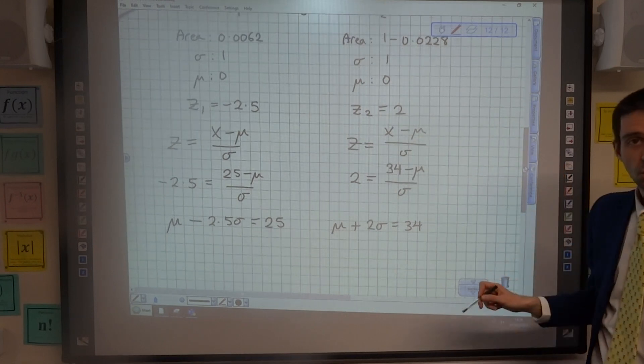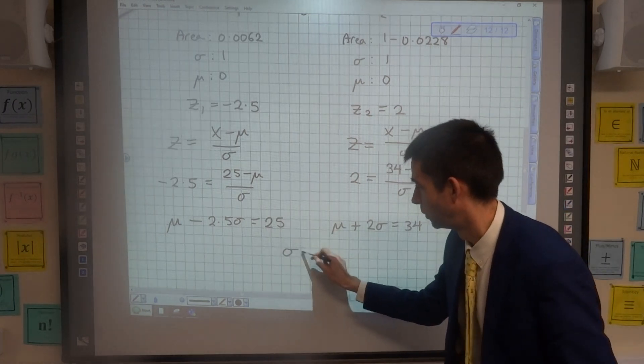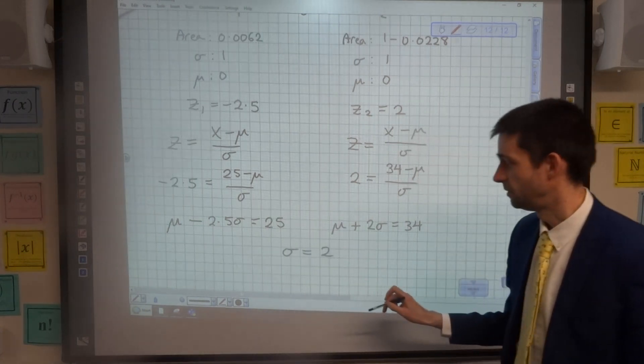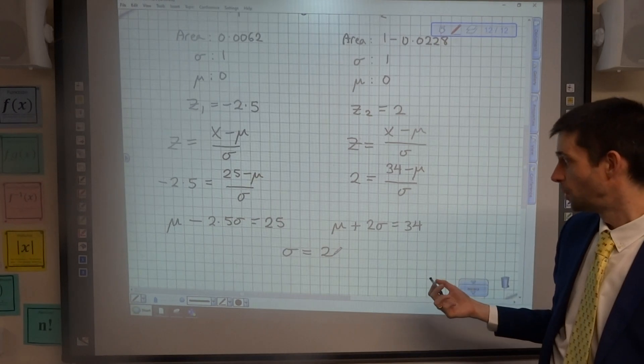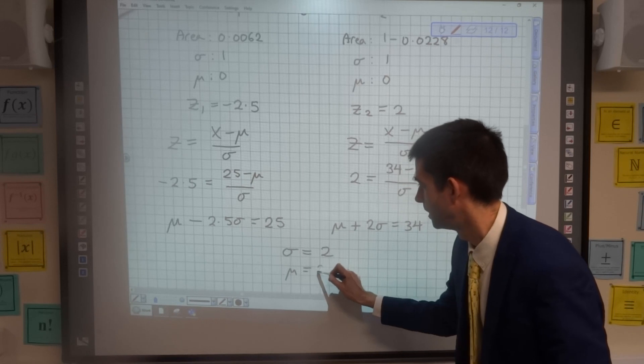Now solving those two equations simultaneously, which you can use the calculator for, you should get that the standard deviation is 2 and that the mean is 30.